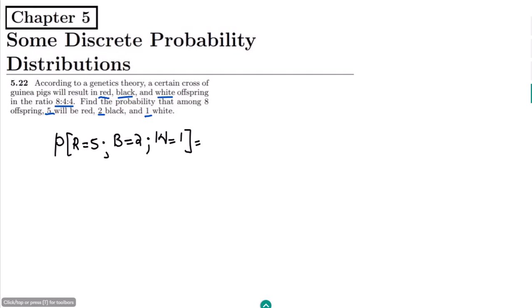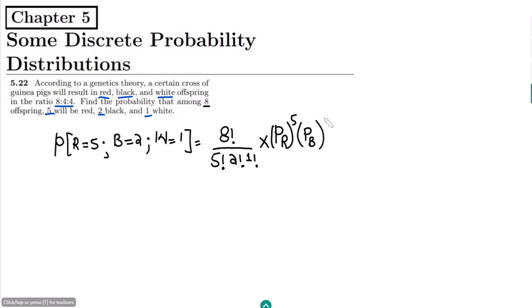The total items are 8. The formula is: total items factorial divided by the number of red items factorial, multiplied by the black items factorial, and white items factorial — multiplied by the probability of red raised to the power 5, the probability of black raised to the power 2, and the probability of white raised to the power 1.